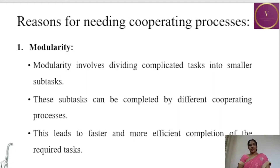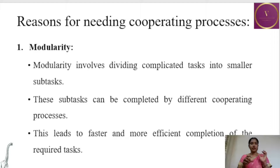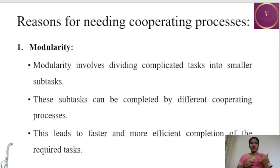Next are the reasons for needing cooperating processes, which can also be considered as the advantages of cooperating processes. The first reason is modularity — dividing the whole big project into smaller subtasks or modules so that each module can be worked on separately by different people and finally combined into a single project. These subtasks can be completed by different cooperative processes, leading to faster and more efficient completion of the required task.